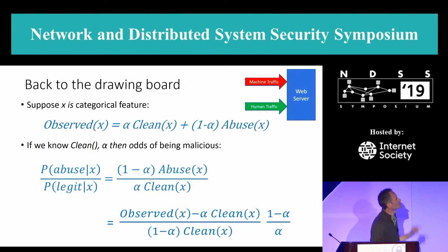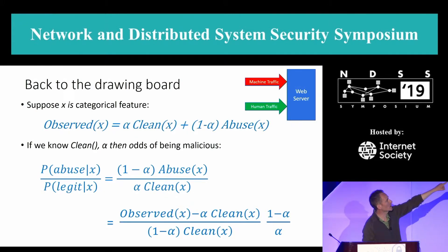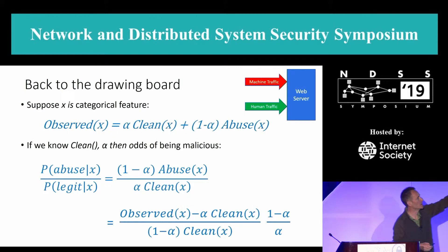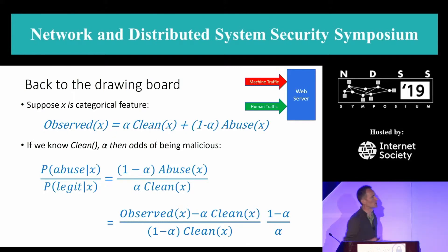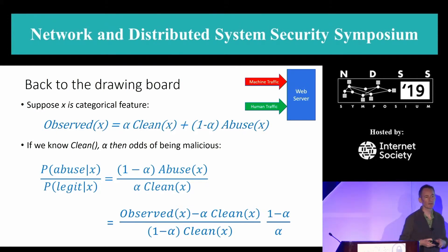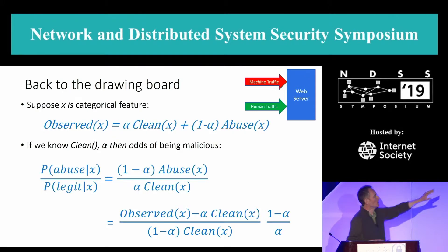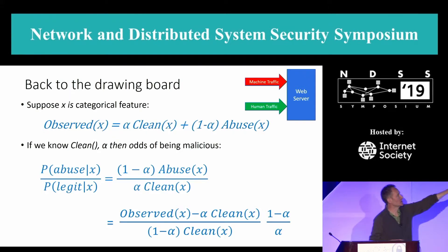So back to the drawing board. I've got good traffic and bad traffic coming in. My observed traffic is some mix of clean stuff and attack stuff: alpha times clean plus one minus alpha times abuse. The problem is I don't know the distribution of clean, I don't know the distribution of abuse, and I don't know what alpha is. So basically three unknowns.